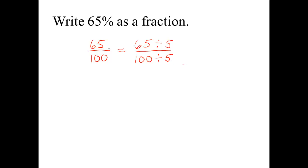We can tell if a number is divisible by 5 if the ones place is a 5 or a 0. 65 divided by 5 is equal to 13, and 100 divided by 5 is equal to 20. So 65 percent as a simplified fraction is 13 over 20.